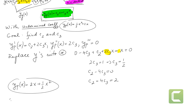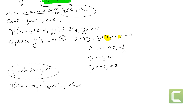So the full solution to the equation is c1 plus c4 e to the x plus c5 x e to the x plus one-half x squared plus 2x. The annihilator method requires one extra step to find the constants of the particular solution. To find c1, c4, and c5, we would need an initial value problem with initial conditions.